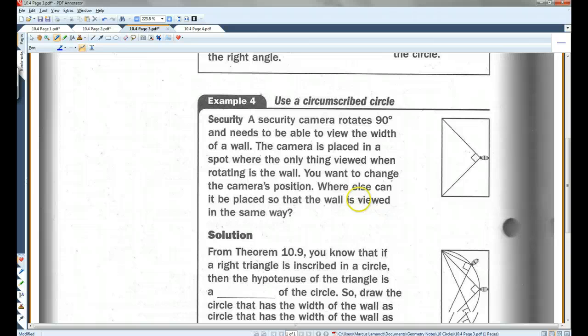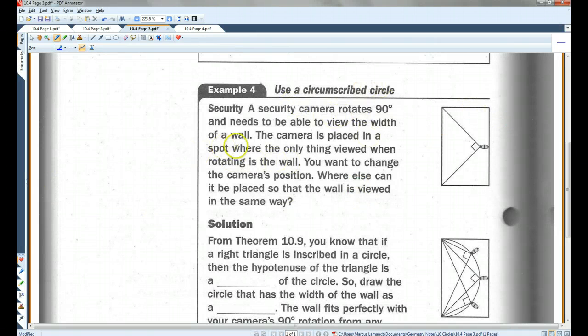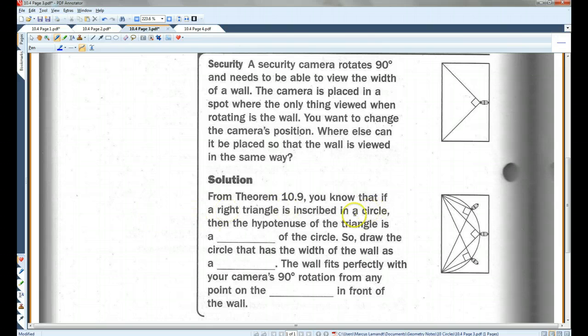So, for example, a security camera rotates 90 degrees and needs to be able to view the width of a wall. The camera is placed in a spot where the only thing viewed when rotating is the wall. You want to change the camera's position. Where else can it be placed if the wall is viewed in the same way? From theorem 10.9, you know that if a right triangle is inscribed in a circle, then the hypotenuse of the right triangle is a diameter of the circle. So, draw the circle that has the width of the wall as a diameter. The wall fits perfectly with your camera's 90 degree rotation from any point on the semi-circle in front of the wall. So, you could place the camera at any one of these three points and you can still get the whole wall.